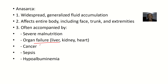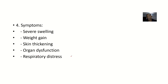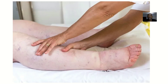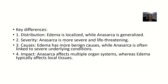Anasarca can lead to organ failure — the liver, heart, and kidney are most likely affected. It can also lead to cancer, sepsis, and reduced levels of albumin — hypoalbuminemia. The symptoms are all severe: severe swelling, weight gain, skin thickening, organ dysfunction, and respiratory distress.